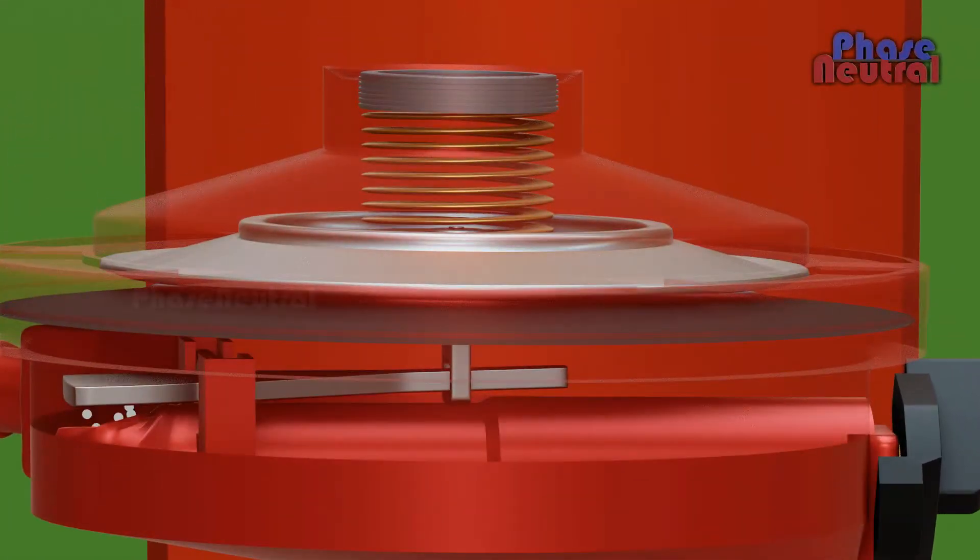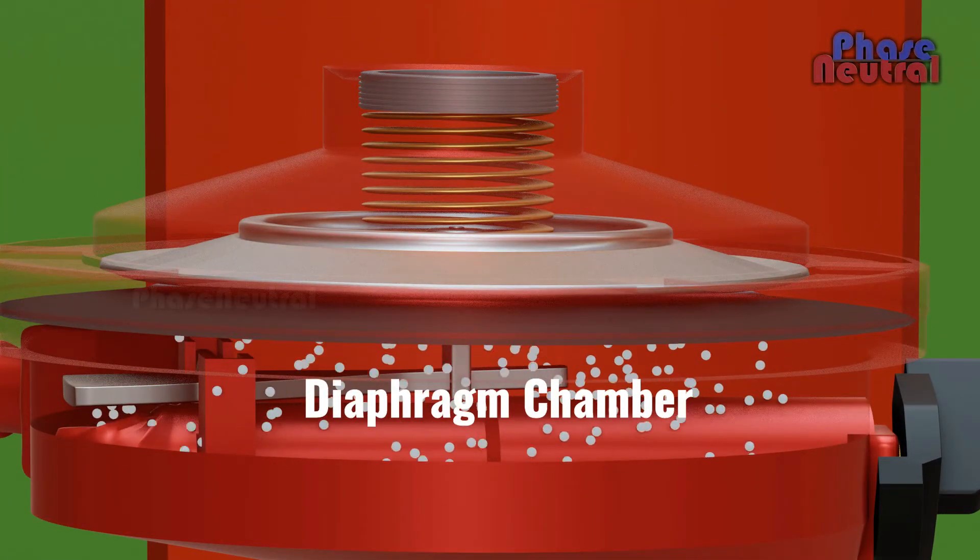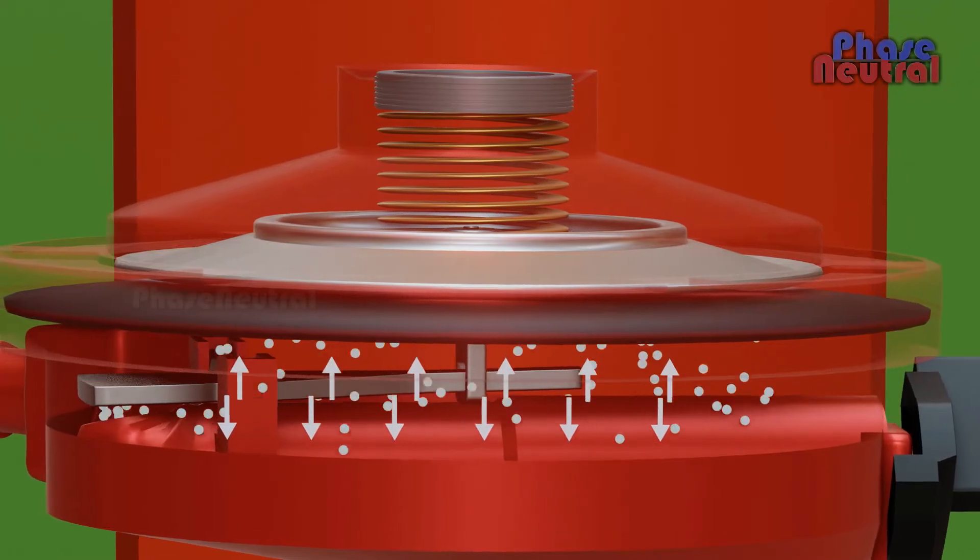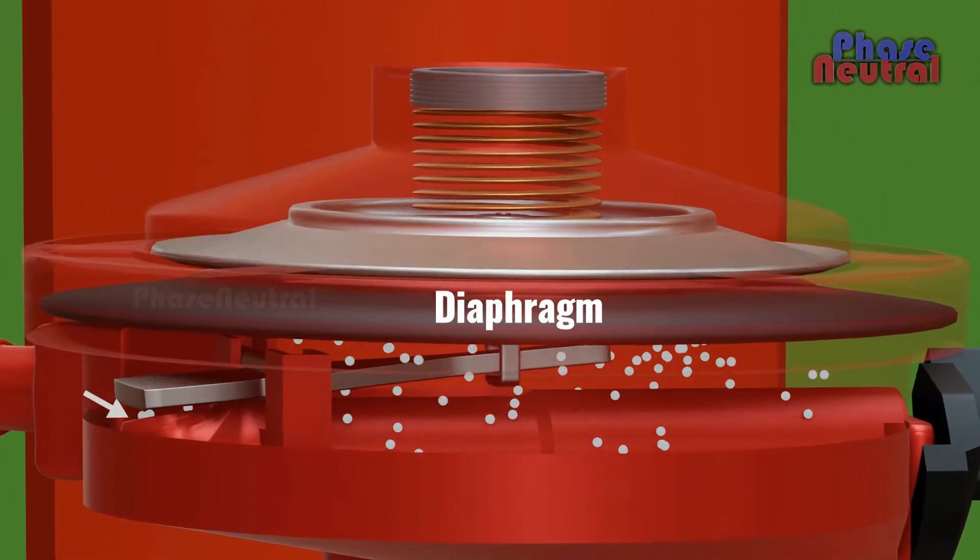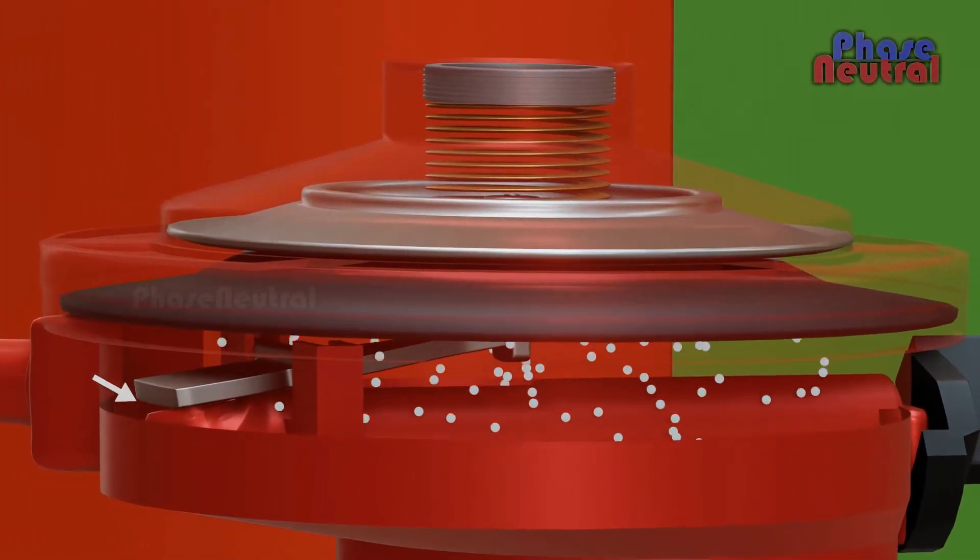This gas flows to the gas stove through the diaphragm chamber. Because of the gas's high pressure, it pushes up the diaphragm. The diaphragm pulls the lever up and stops the gas flow.